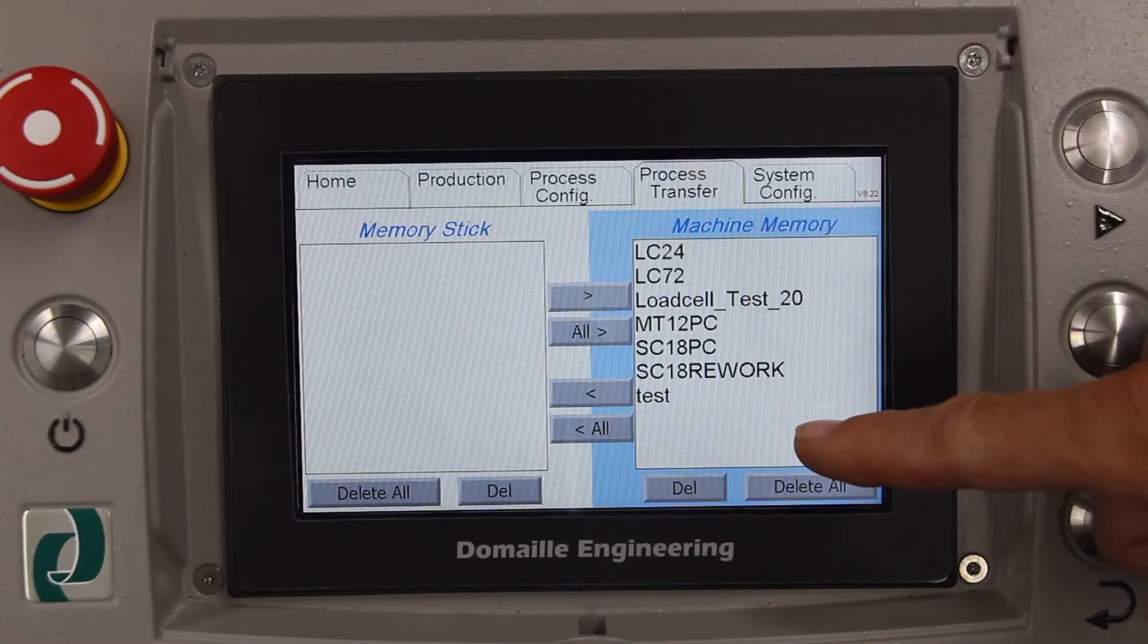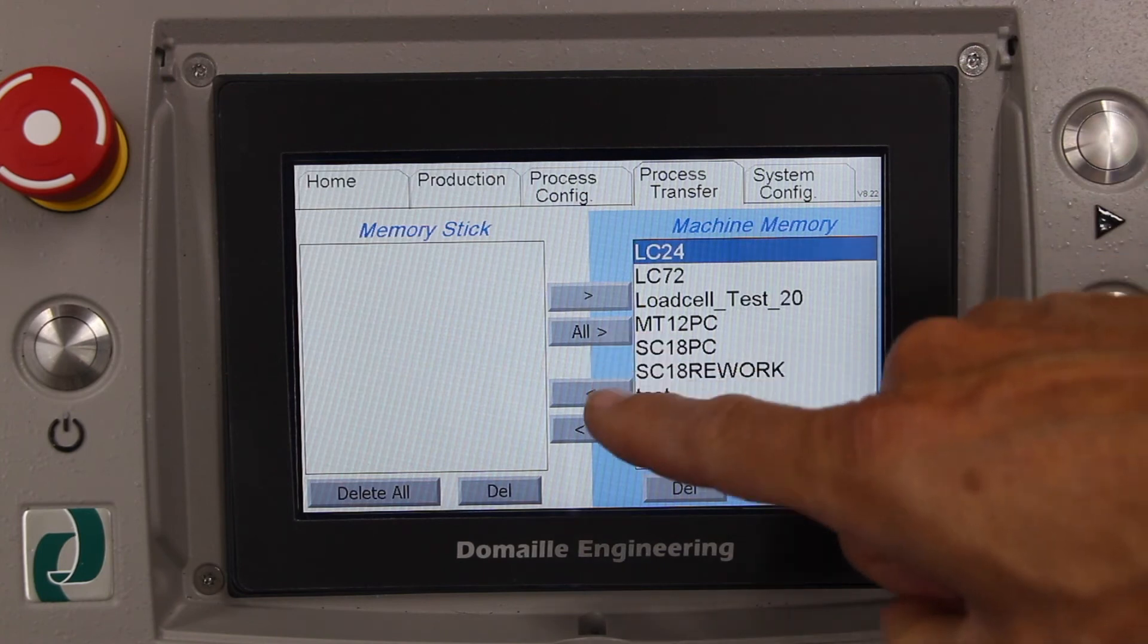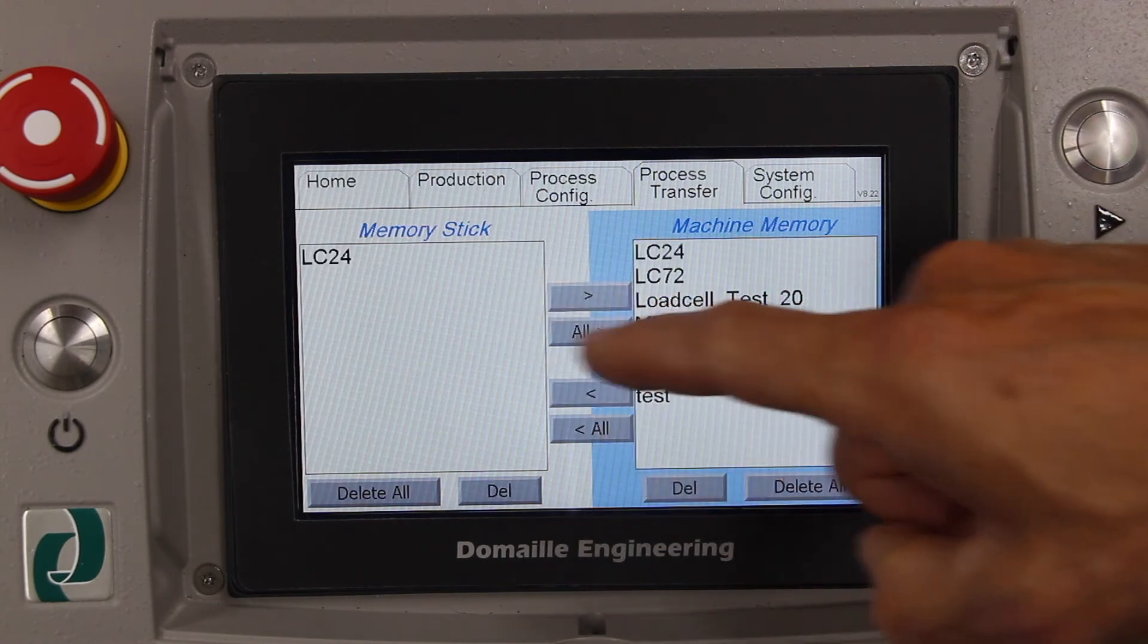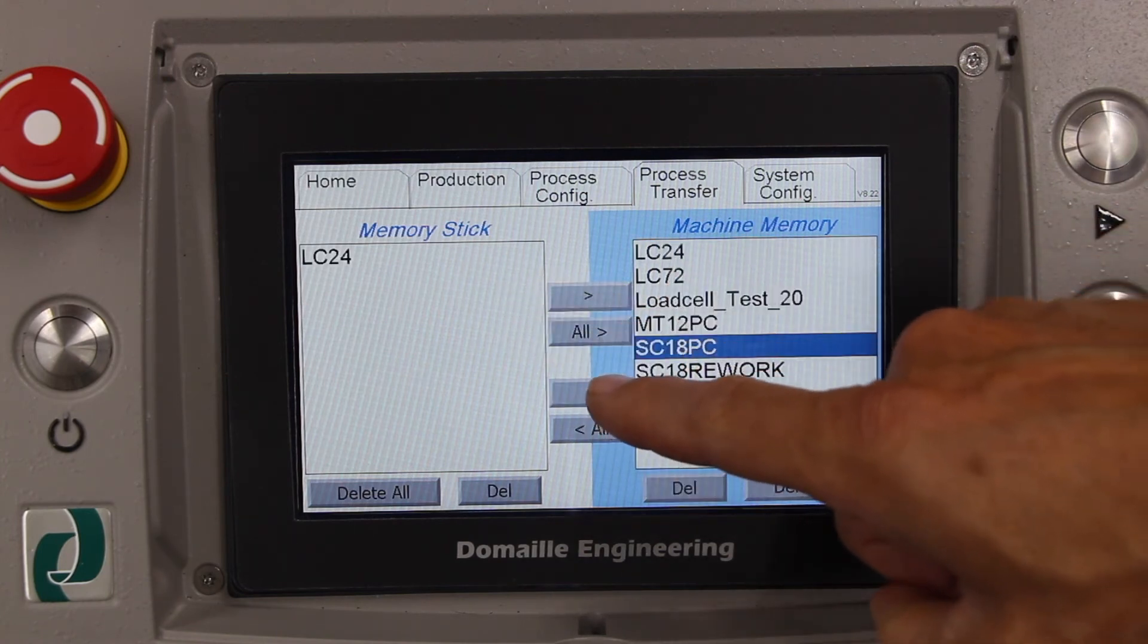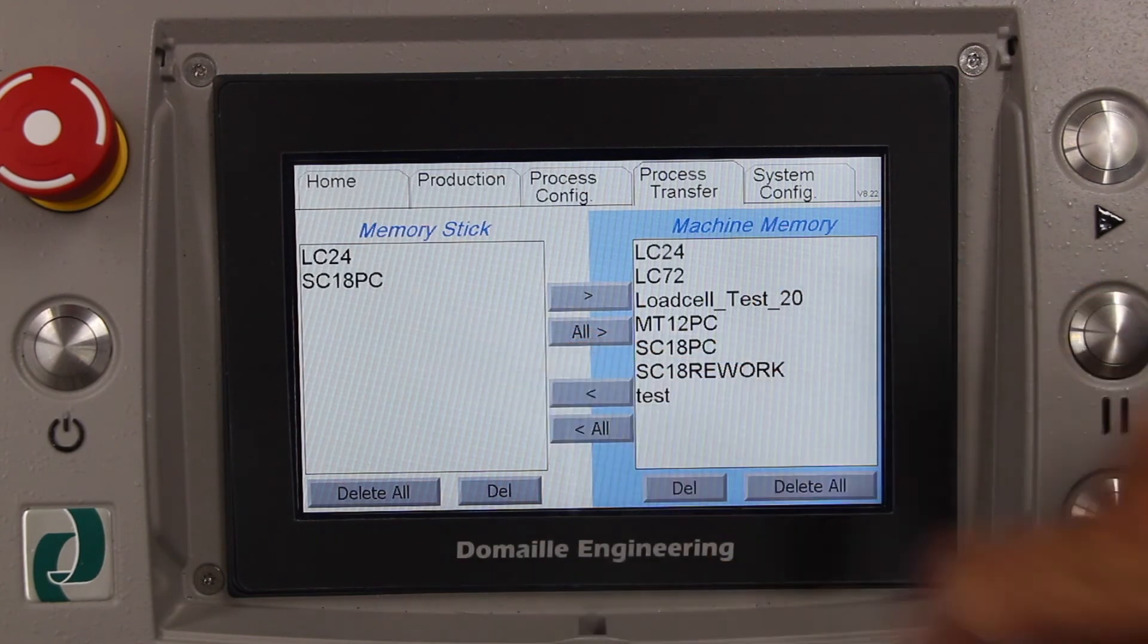Once the process is stored into the machine memory, it can be safely backed up by using a USB stick. You can also upload this to any other Domeo 5320 polisher and be operational in a matter of seconds.